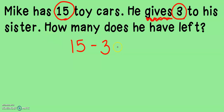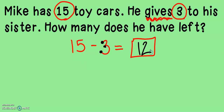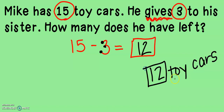Then the question says how many does he have left? When we do this subtraction, I'm going to be using touch points to help me subtract. When I use touch points, I say the big number, and since I am subtracting, I need to count down like this: 15, 14, 13, 12. That means that Mike has 12 toy cars left. So I put my number answer and my label to show what the item was in the problem.